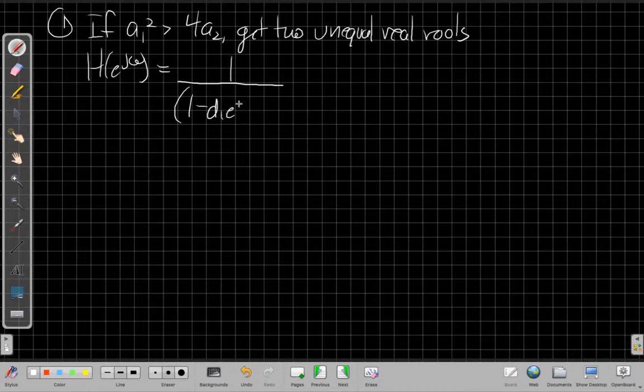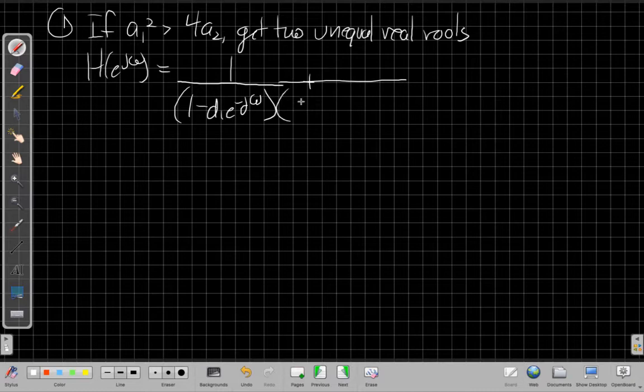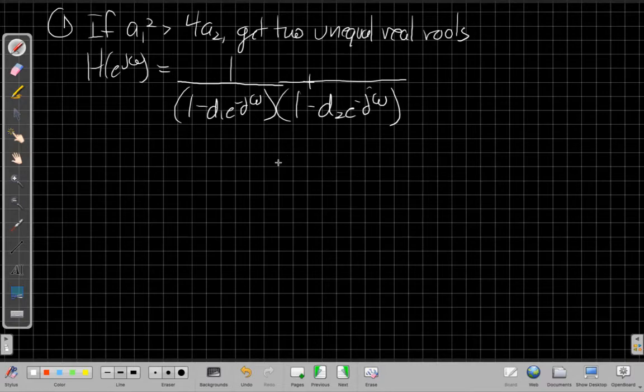I'd have something that was 1 minus d1 e to the minus j omega. Nope. I've separated here. I'm just factoring it. And 1 minus d2 e to the minus j omega. Alright, so those are my two. d1 and d2 are my unequal real roots.